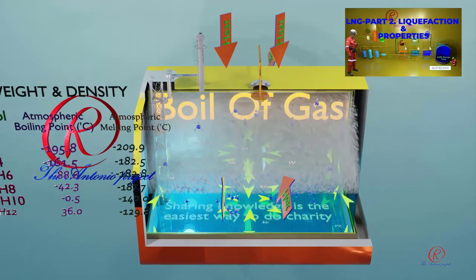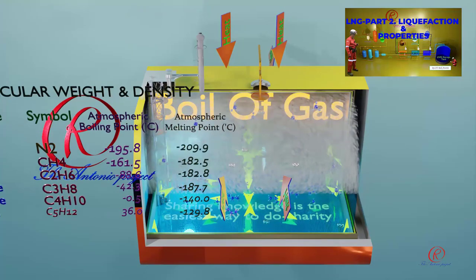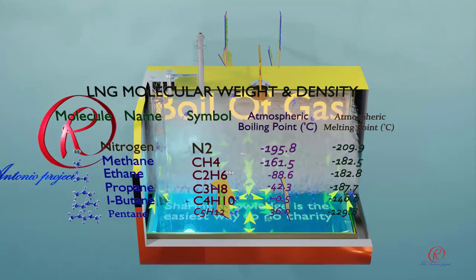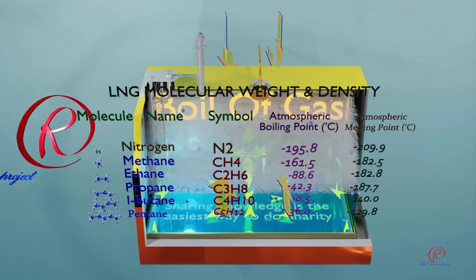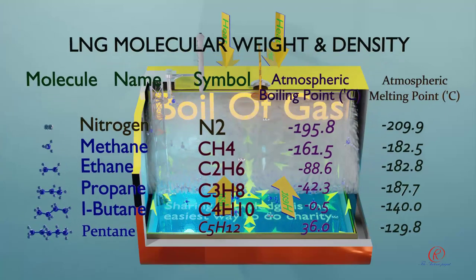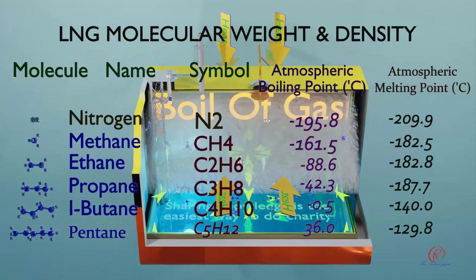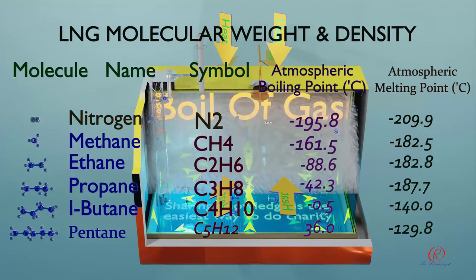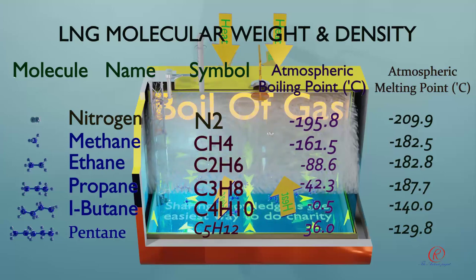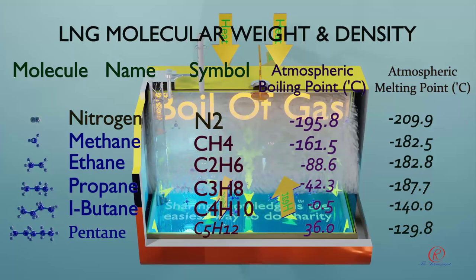Other factors affecting the significance of weathering include the percentage of heavier hydrocarbons in the initial LNG. Significant weathering is more likely to occur in tanks storing small amounts of cargo, such as in FSUs, FSRUs, and LNG fuel vessel storage tanks.